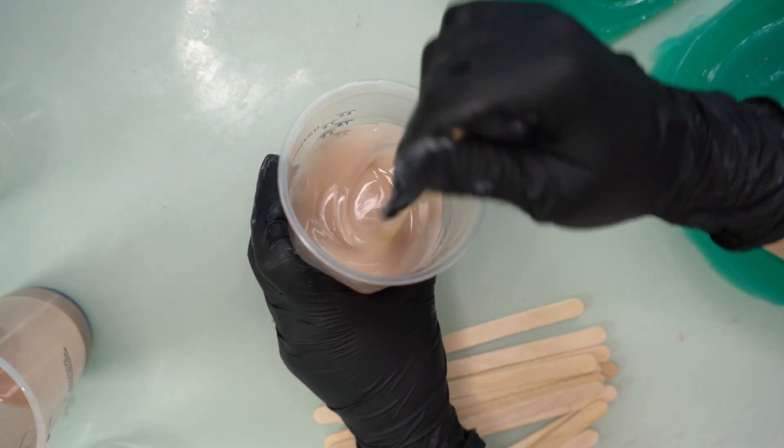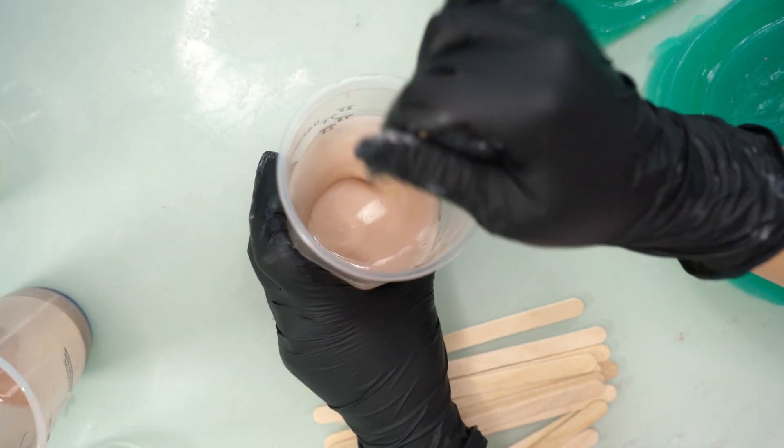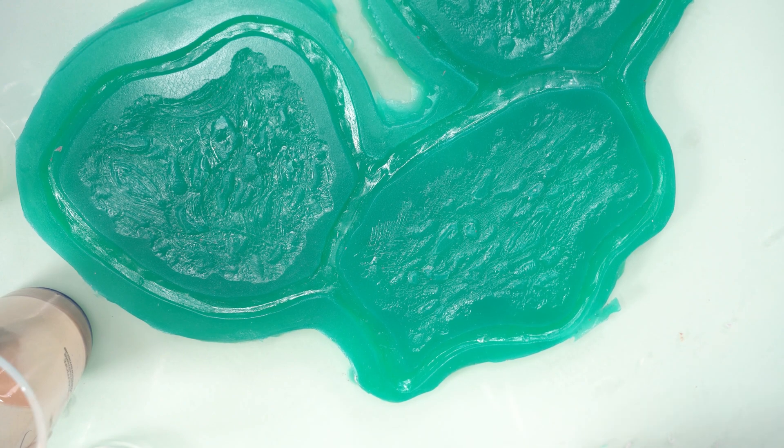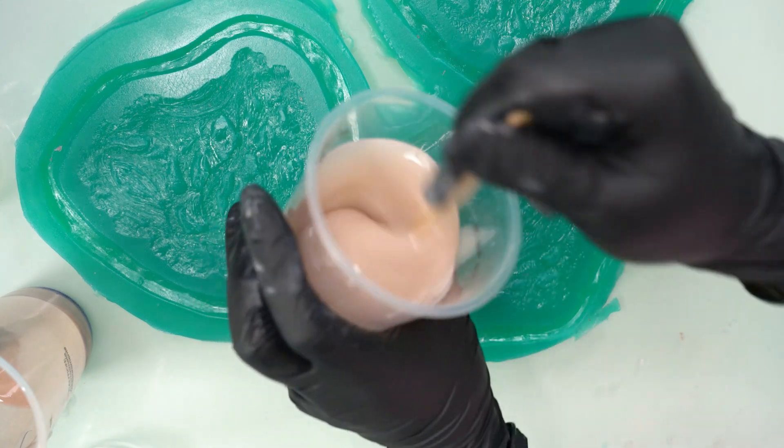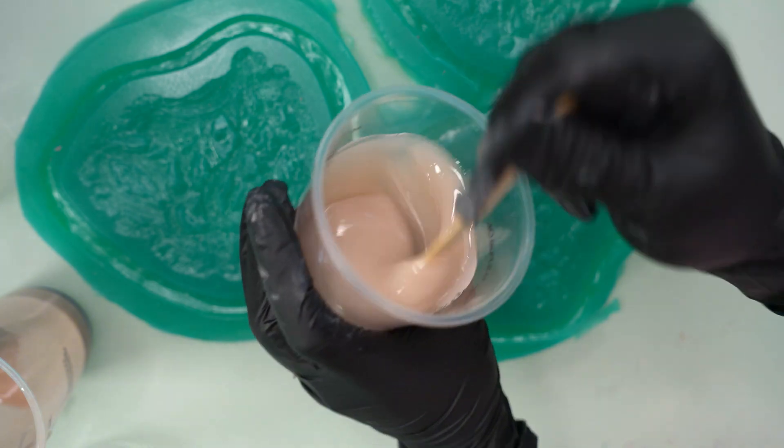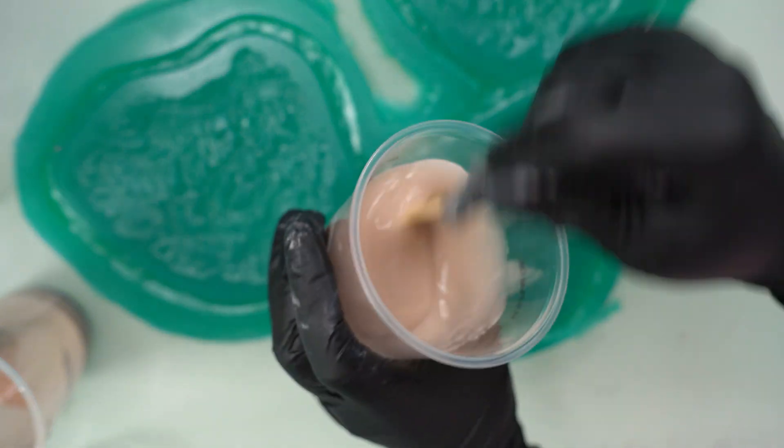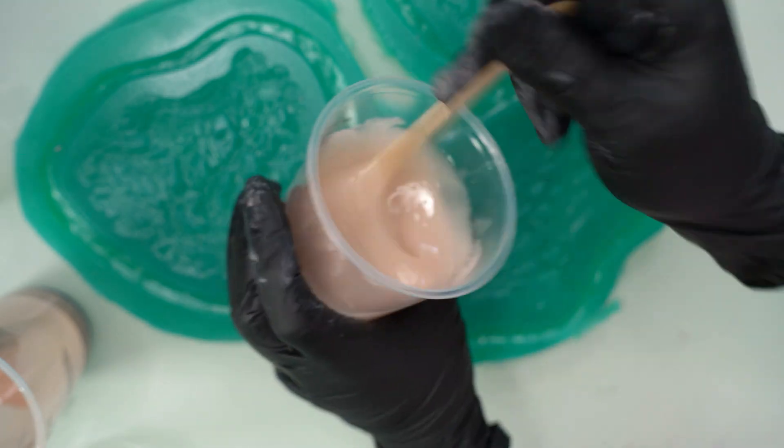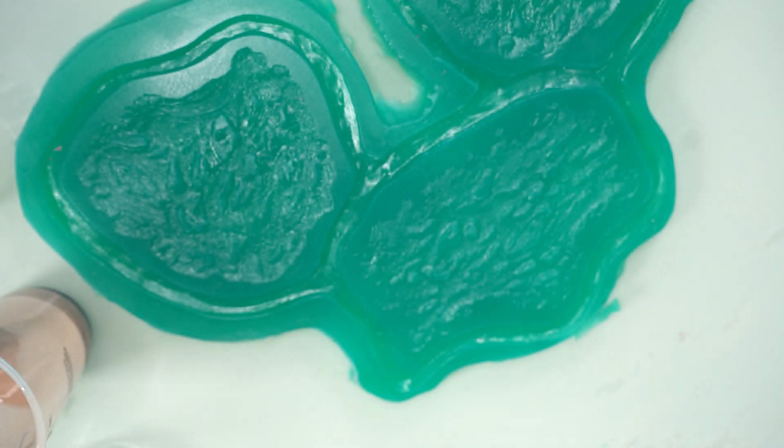It's best to do A then Deadener and then B because if you do A then B then Deadener, it can start curing before you're ready. I also did a double cup mix, so I poured everything into one cup, mixed it up, and then poured it into another cup and mixed it again. This will just help make sure everything's mixed and there's no little leftover bits on the sides.